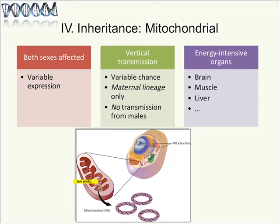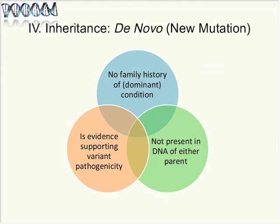Mitochondrial inheritance has vertical transmission but only through the maternal lineage, because mitochondria are transmitted via the egg and never via the sperm. The phenotype involves energy-intensive organs because mitochondria are energy producers, and cells consuming a lot of energy are most affected. The last pattern is de novo or new mutation — no family history in a dominant situation, and it's not present in either parent's DNA. A de novo variant is considered supporting evidence that it may be pathogenic when associated with a disease.